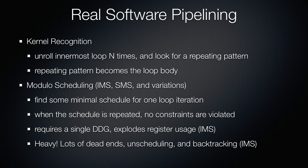When you're doing real software pipelining — not that pretend thing we were doing last time — there are two families of algorithms. There's kernel recognition, which some people use, but I don't know that many things that use it. You're basically unrolling the innermost loop an unspecified number of times and looking for a repeating pattern which becomes your loop body. I'm not going to get into the details on that one. Modulo scheduling seems to be immensely more popular, and those are the ones I'm going to go into.